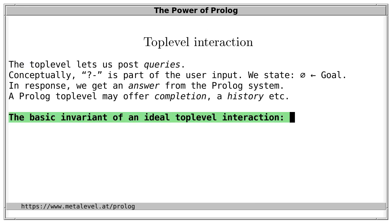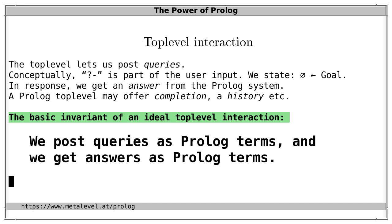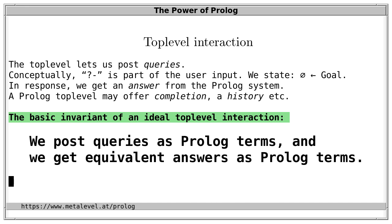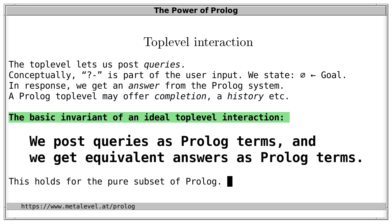We've now seen a sample interaction. The basic invariant of an ideal top-level interaction is clear from these examples: we post queries as Prolog terms and we get answers as Prolog terms, and the answers are declaratively equivalent to the queries. There is a nice conceptual simplicity — we put terms in and we get terms out. This holds at least for the pure subset of Prolog. If the goal has side effects, such as loading a library or producing output on the terminal, then this equivalence between queries and answers no longer holds.